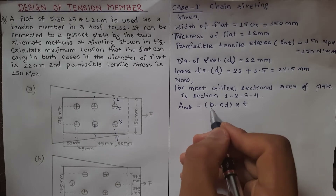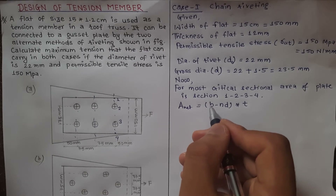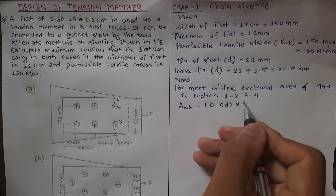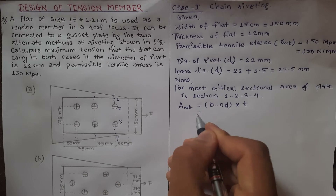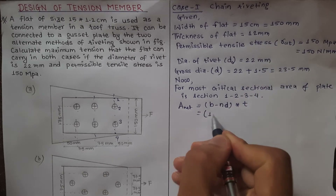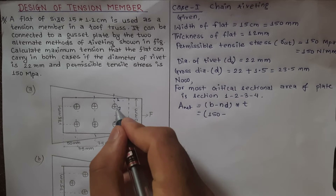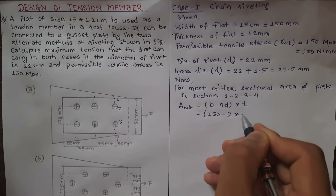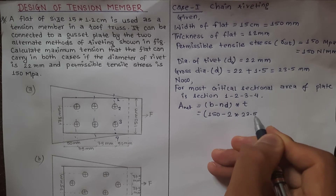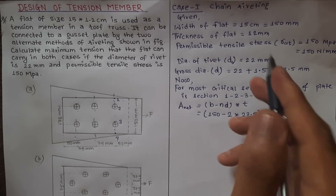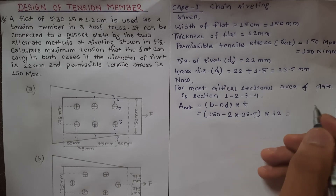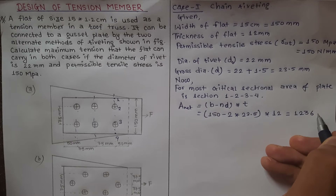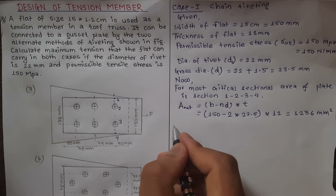In the formula A_net = (b − n·d) × t: b is the plate width = 150 mm, n is the number of rivets = 2, d is the gross diameter = 23.5 mm, and t is the thickness = 12 mm. Therefore A_net = (150 − 2 × 23.5) × 12 = 1236 mm².